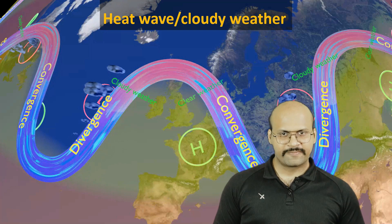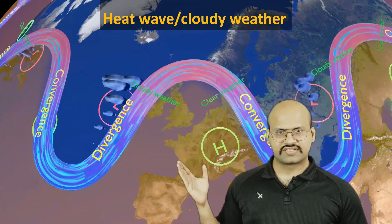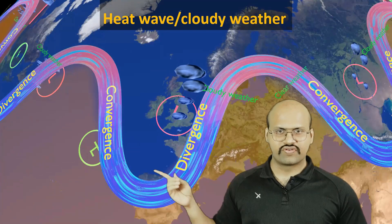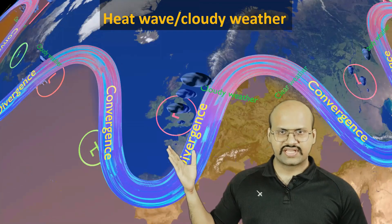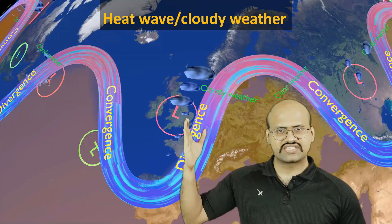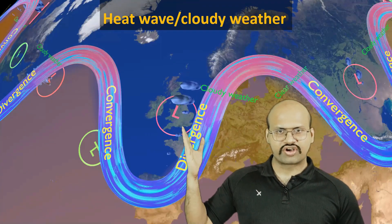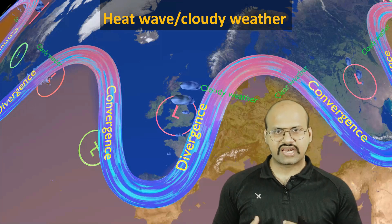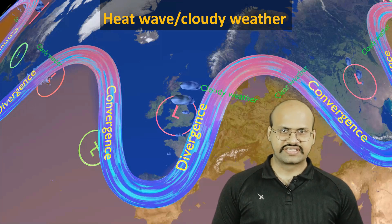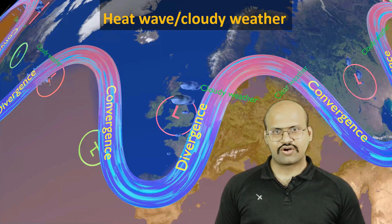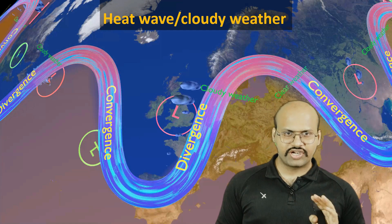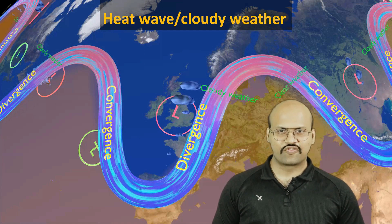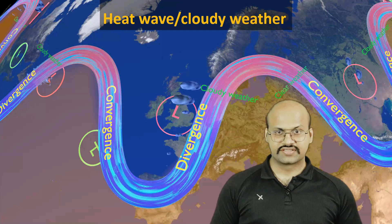Similarly, if the divergence branch halts over a region and the jet stream stops moving, that region will experience prolonged cloudy weather with rain and cloudiness in the sky. This is how the movement or rotation of the jet stream influences the climate of a region.